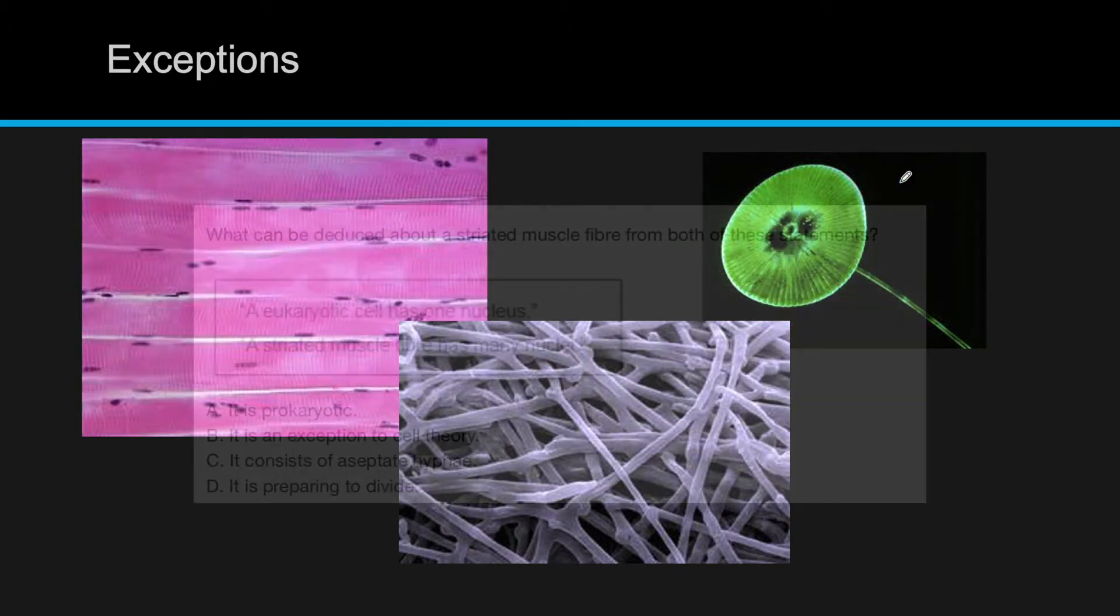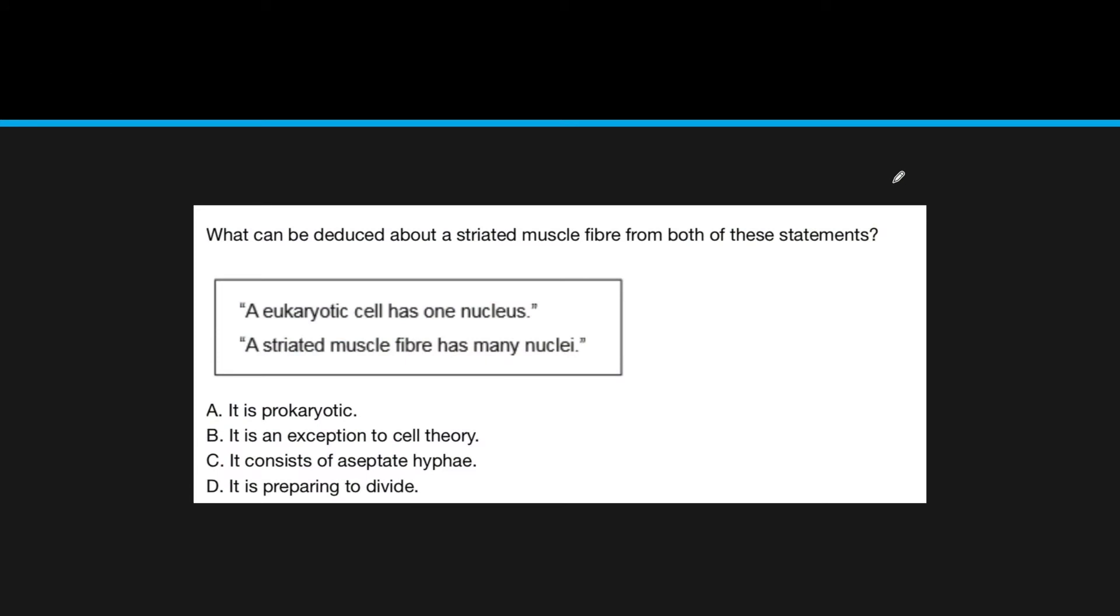Here's one example question from paper one: What can be deduced about striated muscle fiber from both of these statements? A eukaryotic cell has one nucleus, and a striated muscle fiber has many nuclei. I'm going to take a moment and pause.